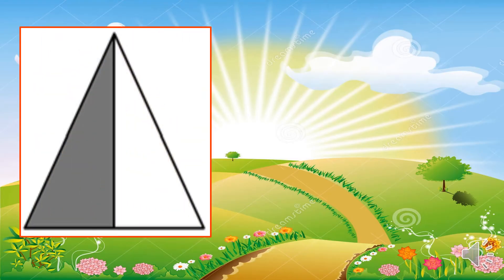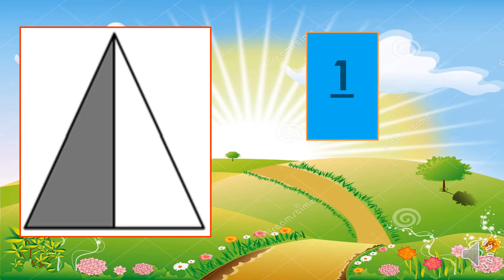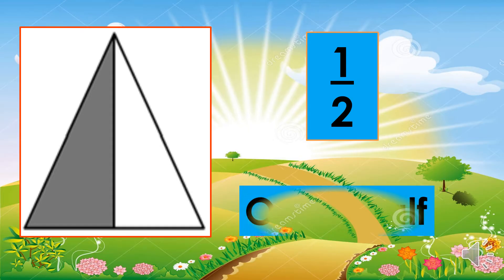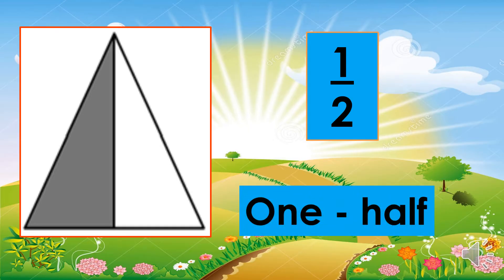Next, there is one shaded part in this triangle, so it should be written as the numerator. And it is divided into two equal parts, so two is the denominator. The fraction symbol for the shaded part is one-half. And here is the fraction word: one-half.